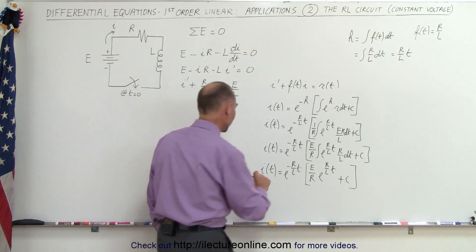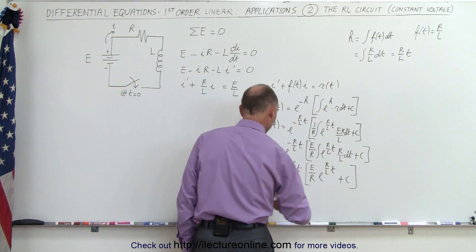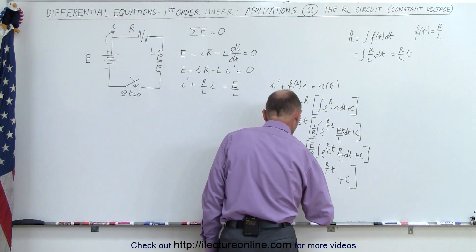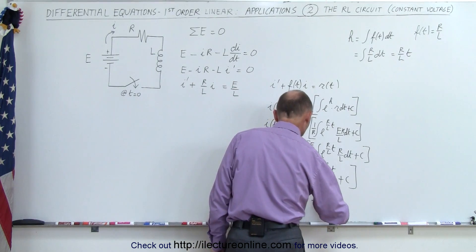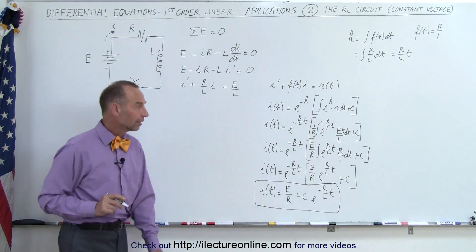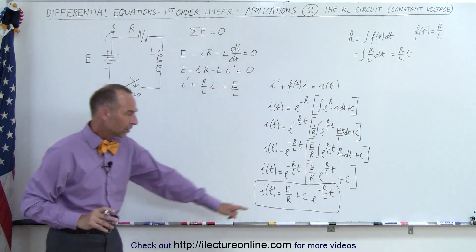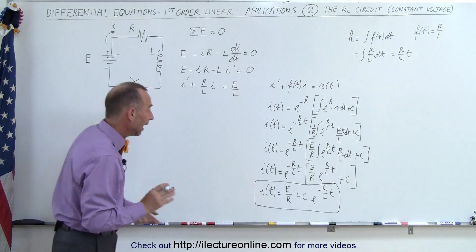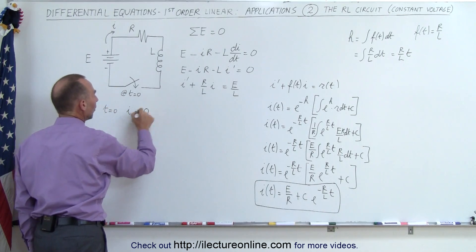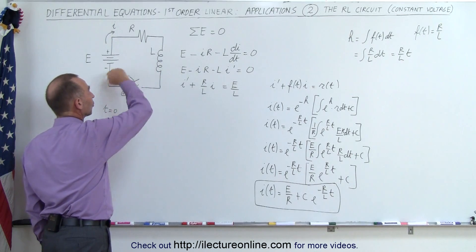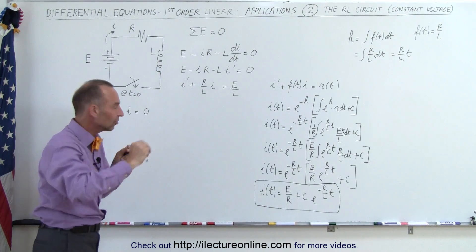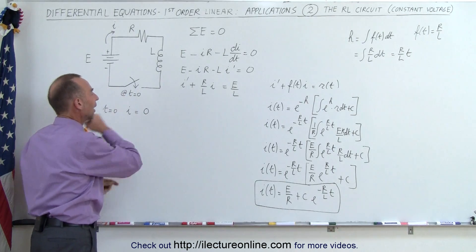Multiplying out, I as a function of time equals E over R plus a constant of integration times E to the minus R over L times time — the general solution. Now we still have a constant of integration to solve. We know that when we first close the switch at T equals zero, I must be zero, because the inductor will oppose an instantaneous change in current.